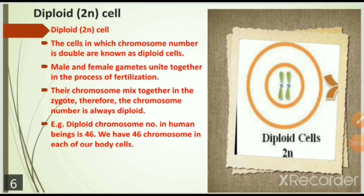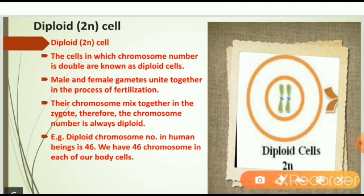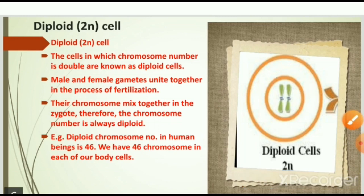With the help of a diagram, we can see the diploid 2n cell where the chromosome number is double. The cells in which chromosome number is double are known as diploid cells. Male and female gametes unite together in the process of fertilization; the chromosomes mix together in the zygote. Therefore the chromosome number is always diploid. For example, the diploid chromosome number in human beings is 46 — we have 46 chromosomes in each of our body cells.